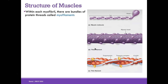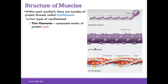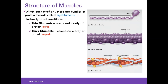A myofibril is a bundle of protein threads called myofilaments, and there are two types. There are thin myofilaments, which are mostly composed of actin — one of the three cytoskeletal proteins. We also have thick filaments, which are composed mostly of myosin. Myosin is most related to motor proteins like kinesin and dynein. A single myosin molecule is a motor protein with a head and a tail, just like kinesin and dynein.